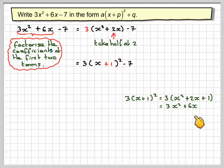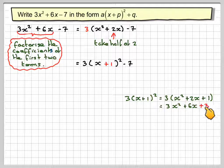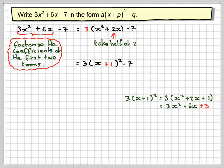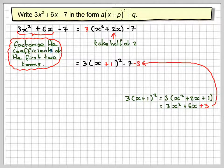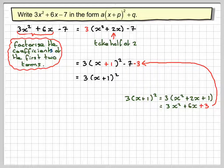We get 3x² + 6x + 3. So notice these here, 3x² + 6x are the same as the original expression, but we have added in a 3. So to compensate we need to take away 3. And therefore the expression becomes 3(x + 1)² and minus 7 minus 3 makes minus 10.